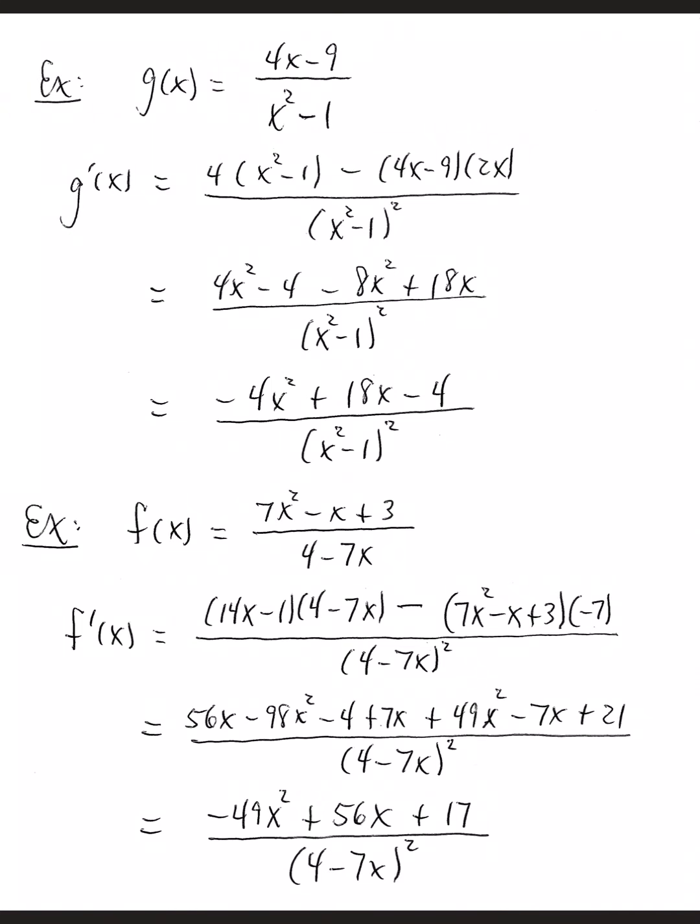Let f of x equal 7x squared minus x plus 3 over 4 minus 7x. Derivative of the top is 14x minus 1 times the denominator minus numerator times the derivative of the denominator all over the original denominator squared.